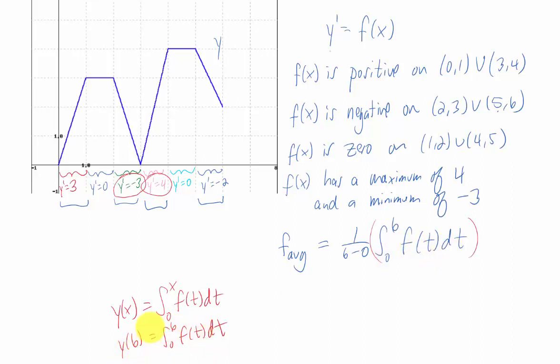Where would we find y of 6 on this graph? Y of 6 is just the y value of this function at x equals 6. So that appears to be 2 to me. Straight off of the graph there, the y value of that function is 2. So our average value of our function is 1/6 times 2, which is just 1/3.